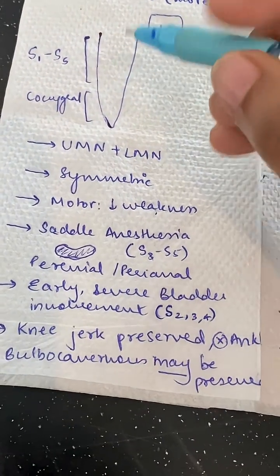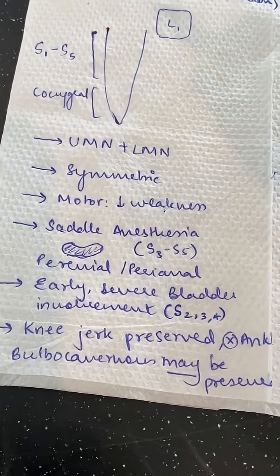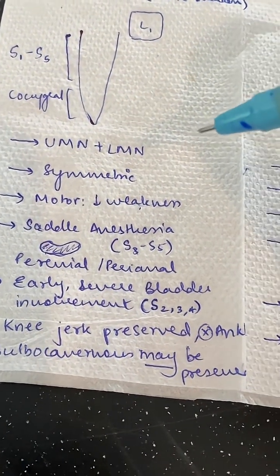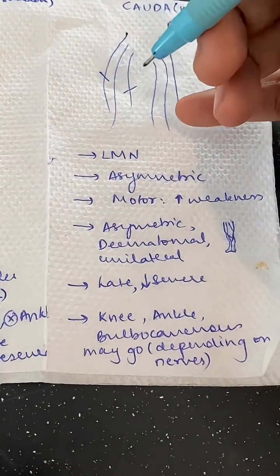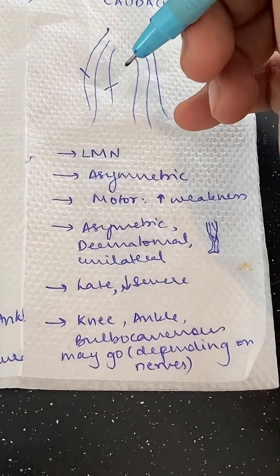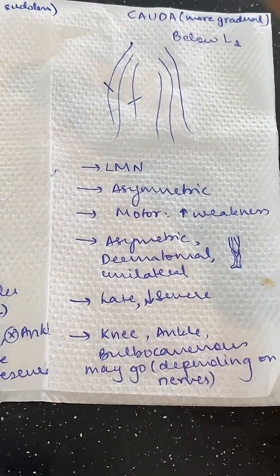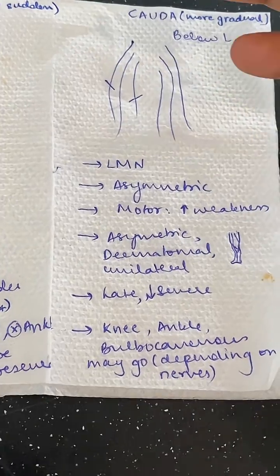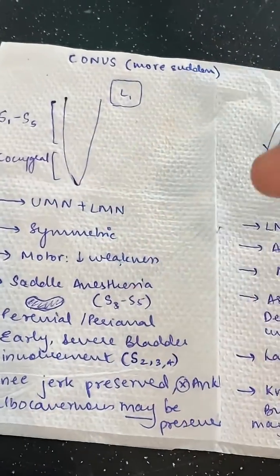The lesion in conus is central and more diffuse, so the motor weakness is slightly lesser. But in cauda equina, since the whole nerve is involved, it's more focal and the weakness seen in the limbs is quite higher compared to conus.